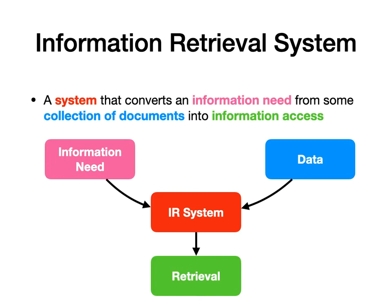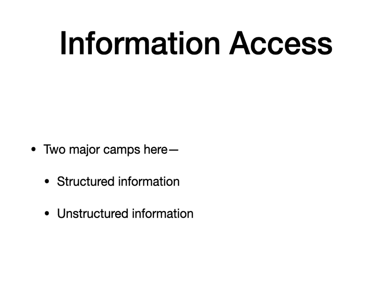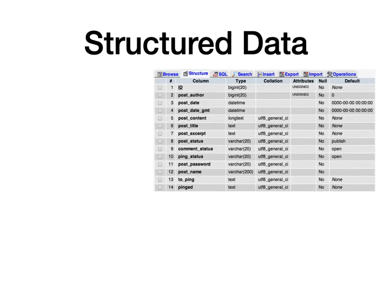There are two major camps for information access in a general sense: structured information and unstructured information. This course is primarily about the latter, but let's talk about what the former is. Structured data is anything that is really well organized — information that's already been curated into one place. Any database management system you might use, like MySQL and similar tools — this is not what we're focusing on here, because these are the kinds of information that someone has already put a lot of work into putting together.